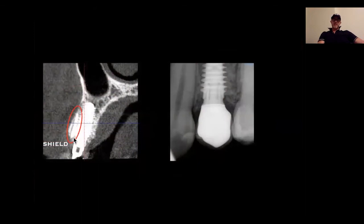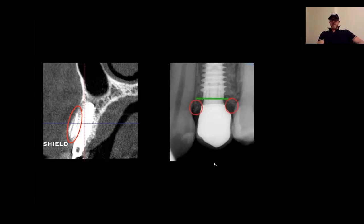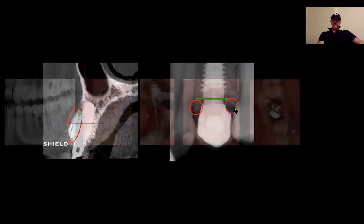Now you can see this cross-section image on the CBCT. This is the position of the shield, the cortical plate, and the beveling. And here on the right side, this is the implant level — cortical — with a nice papillae position and bony peaks.